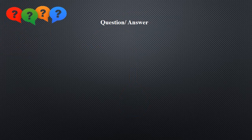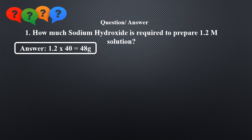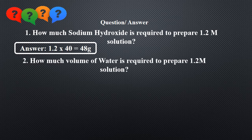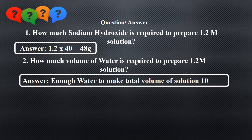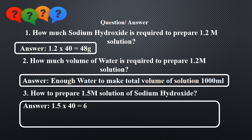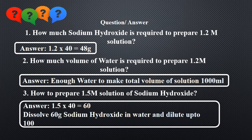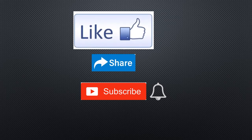How much sodium hydroxide is required to prepare a 1.2 molar solution? How much volume of water is required? Use enough water to make the total volume of solution 1000 ml. To prepare a 1.5 molar solution of sodium hydroxide, dissolve 60 grams of sodium hydroxide in water and dilute up to 1000 ml. What if we need only 100 ml of molar solution? Why prepare 1000 ml when you need only 100 ml — isn't that wastage of chemicals? We will discuss this in the next video. Till then, like, share, and subscribe to my channel. Thank you.